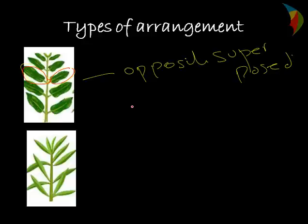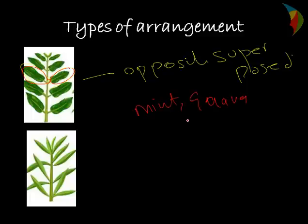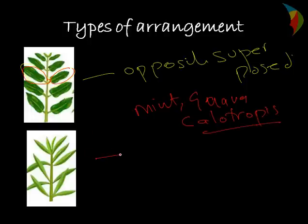The most common examples of opposite phyllotaxy are mint, guava, and Calotropis plant. The third type of phyllotaxy is whorled phyllotaxy.